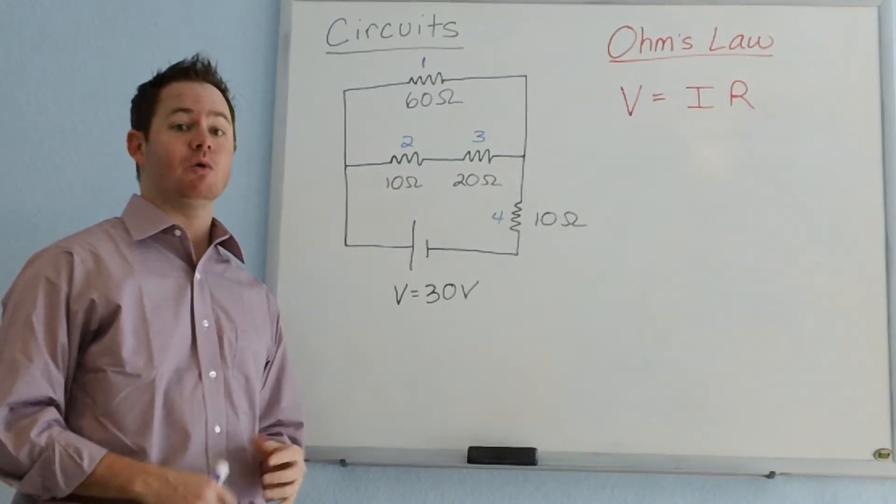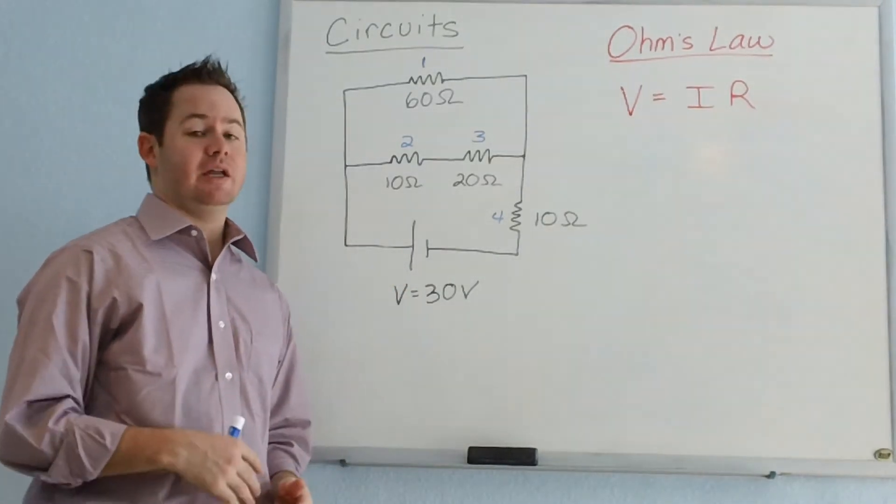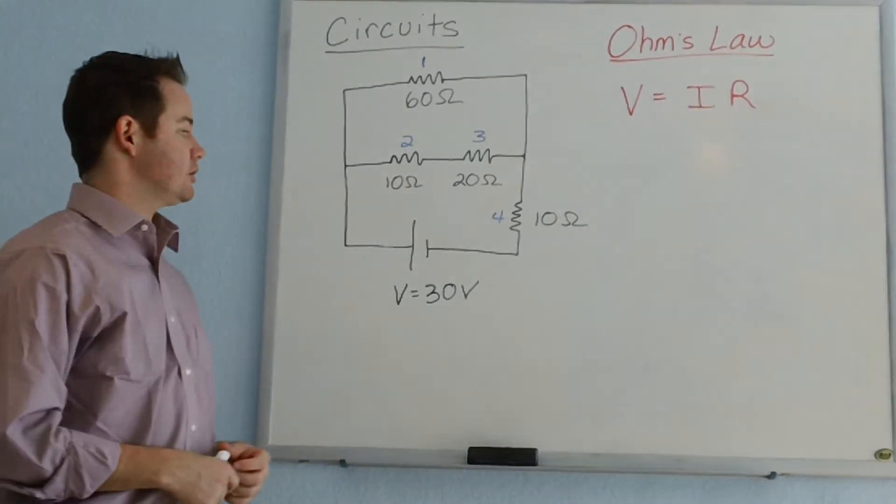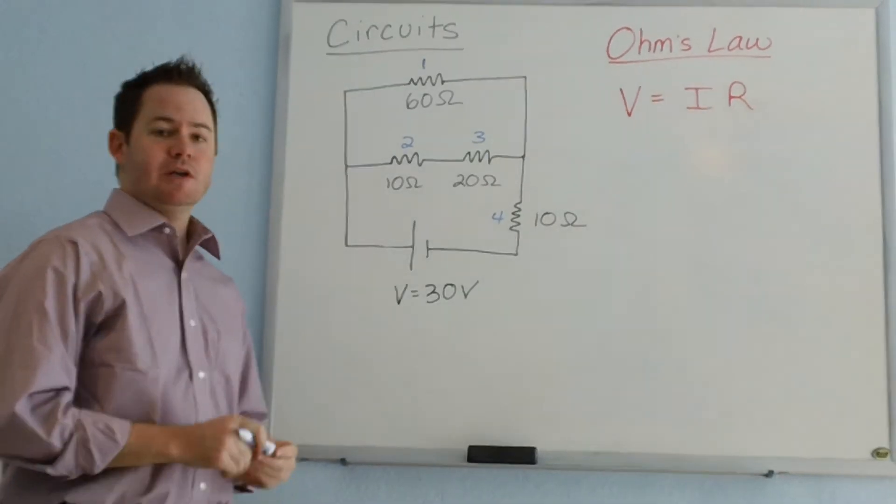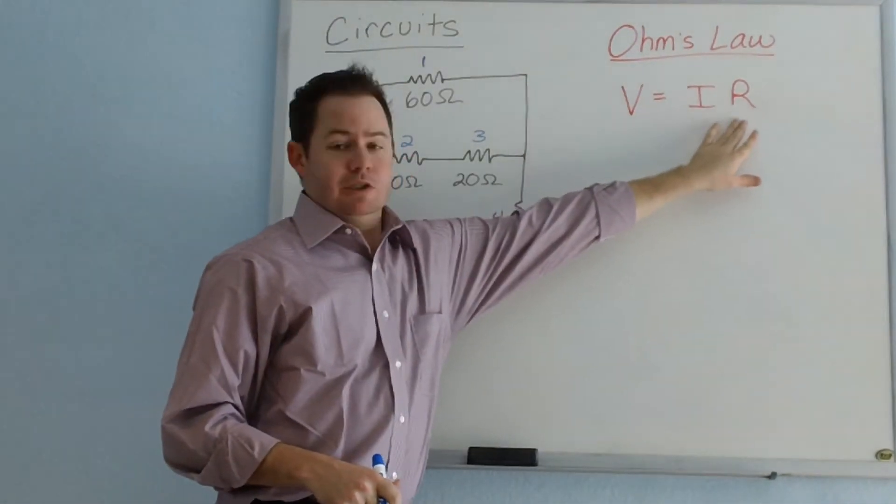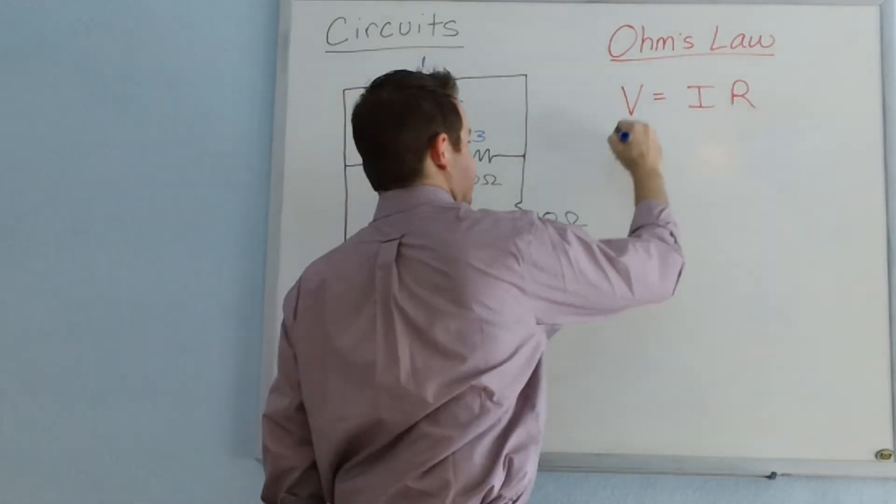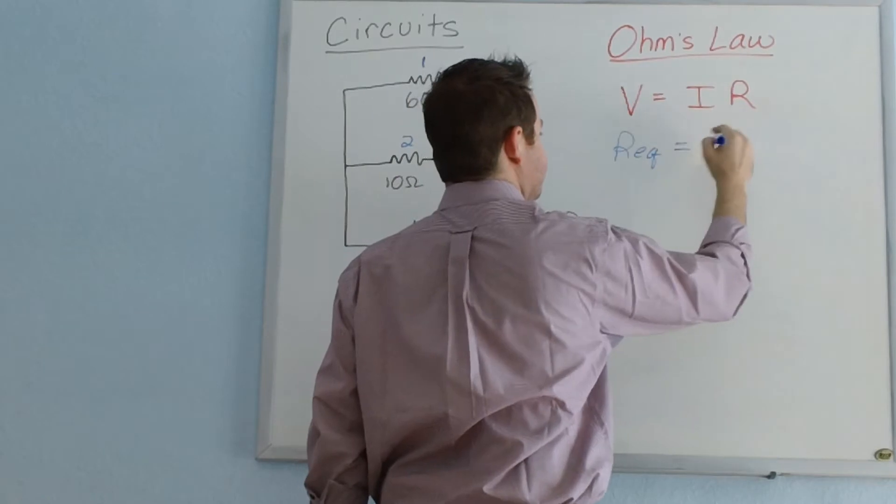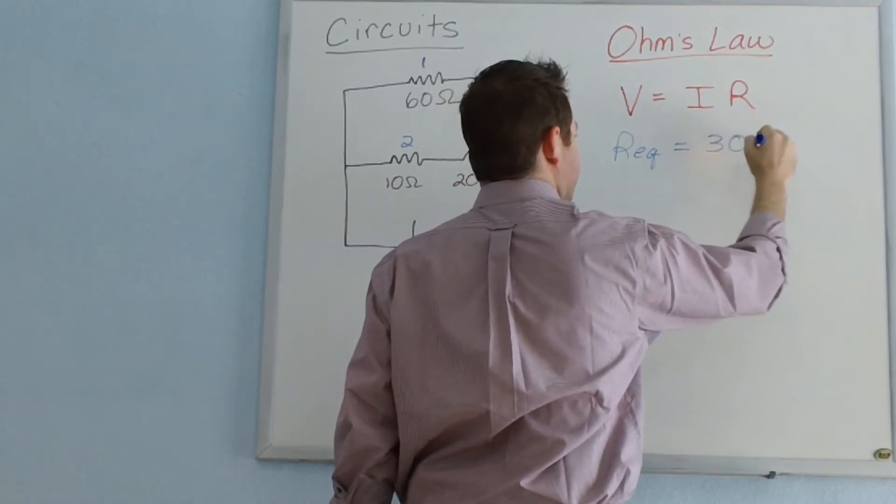If you've already seen that video or if you're comfortable with that skill, then let's go ahead and take a look at the next step in figuring out a little bit more information about what's going on with our circuit. So as we've calculated, R, the equivalent resistance for this circuit, is going to be equal to 30 ohms.